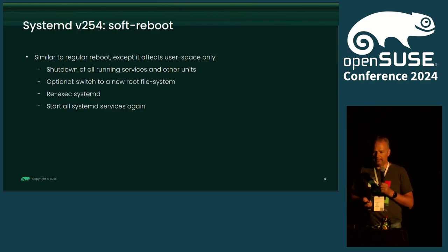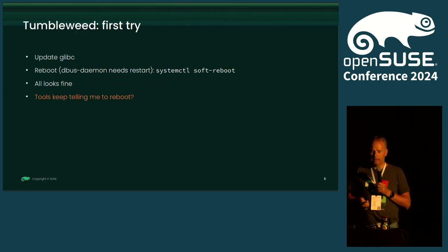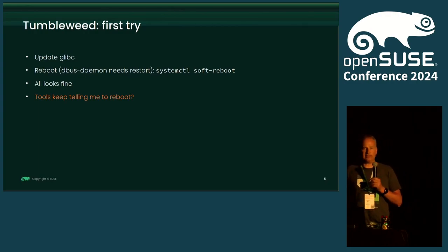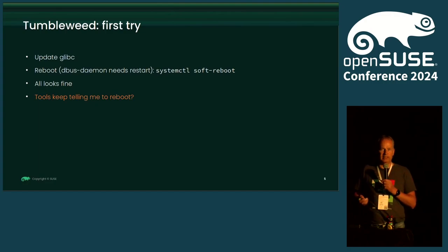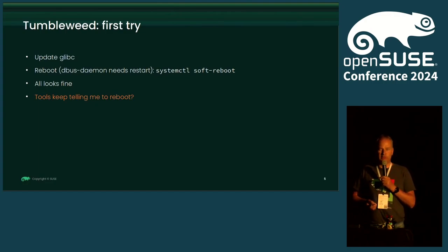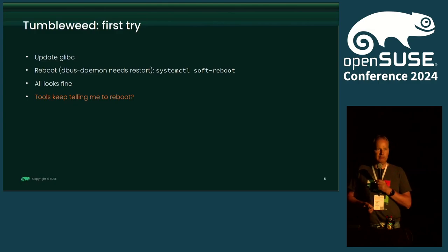What does a soft reboot look like? I typed systemctl soft-reboot after updating the D-Bus daemon, because restarting the D-Bus daemon alone is most of the time a bad idea. So we restart the full userland and everything should be fine — everything looked fine — but the tools keep telling me I need to reboot.